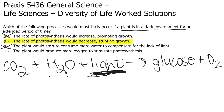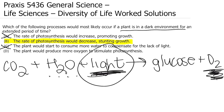D says the plant would produce more oxygen to stimulate photosynthesis. That is not true. The plant producing more oxygen isn't going to cause it to stimulate photosynthesis. The plant does produce oxygen during photosynthesis, but that process of producing oxygen requires light. So the plant cannot produce more oxygen if there's no light. This question really looks at our understanding of photosynthesis and what's happening in the light reactions.